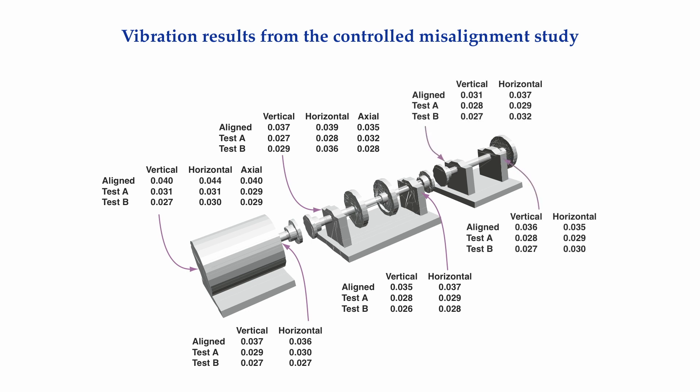On the outer shaft at the bearing on the coupling side in the vertical direction from well aligned to Test B: 0.031, 0.028, and 0.027. In the horizontal direction, the vibration went from 0.037 to 0.029 to 0.032. On the outboard bearing in the vertical direction: 0.036, 0.028, 0.027; and in the horizontal direction: 0.035, 0.029, 0.030. In every case, the amount of vibration was lower when the unit was misaligned than when it was well aligned. And in the majority of cases, the more I misaligned the drive system, the lower the overall vibration got.